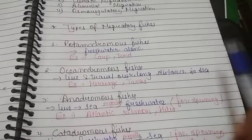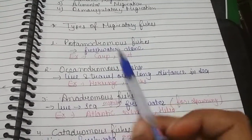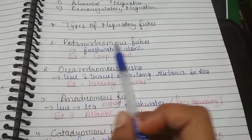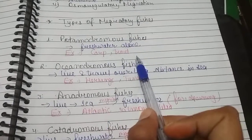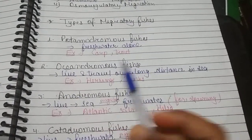Potamodromous fishes live in freshwater alone, meaning they only live in freshwater. Examples: carps and trout. Oceanodromous fishes